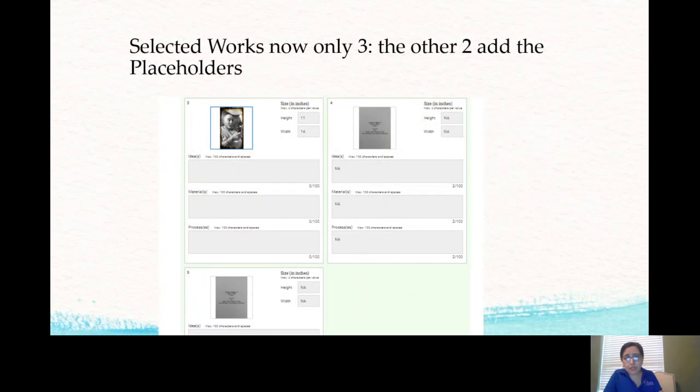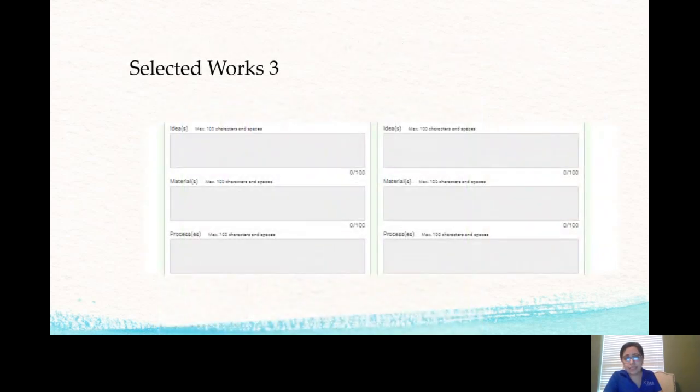Selected works. Now only three. So there's still going to be five placeholders, five images to upload. You will only upload three of your best finished selected works. Your other two, number four and number five, once again you will be adding placeholders. Now the difference in selected works is there is another information box that's called ideas or it's titled idea or ideas.